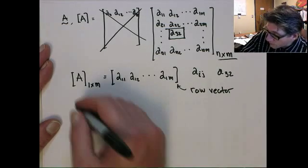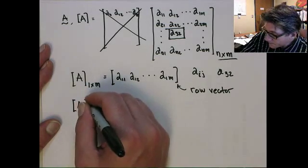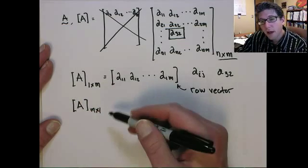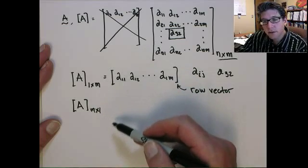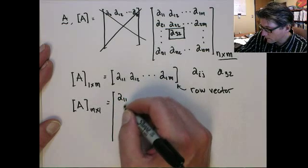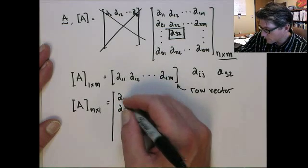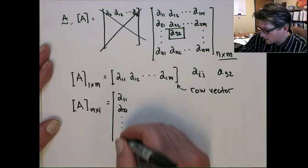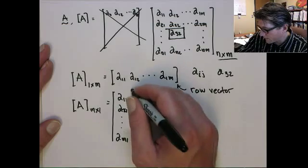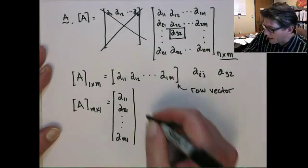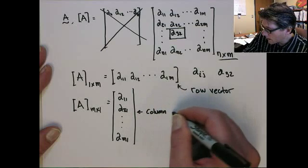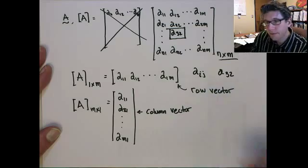Likewise, we could also have a column vector, okay? Where it has m rows, but one column. So a_21, a_m1, okay? And this would be a column vector.